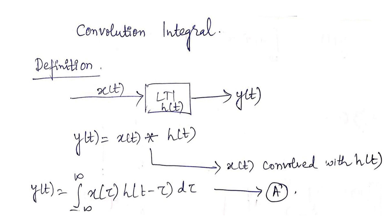The convolution integral is: y(t) = integral from minus infinity to plus infinity of x(τ) h(t − τ) dτ, where τ is called a dummy variable. In this equation there are four important operations: first, folding the signal (the minus τ), second, shifting the folded signal by t units to get h(t − τ), third, multiplying the shifted signal with x(τ), and fourth, integration.